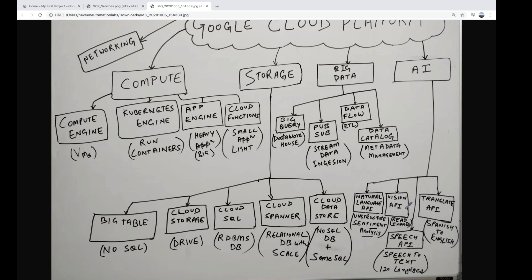The Vision API is for image processing — you can provide multiple images and a huge number of images for processing. Using artificial intelligence, you can generate outcomes and do data processing from images.